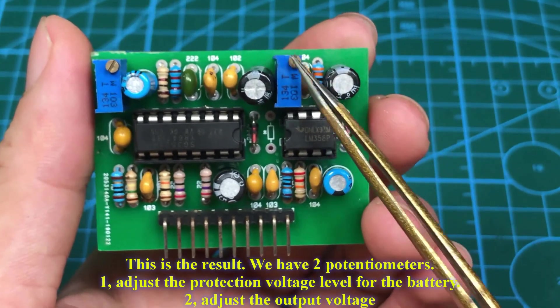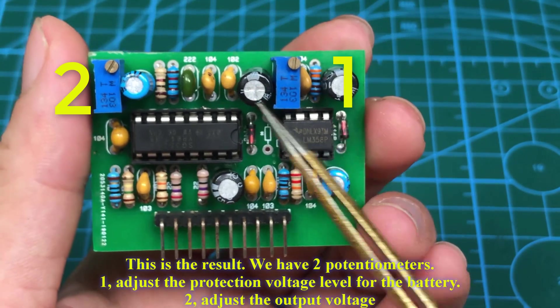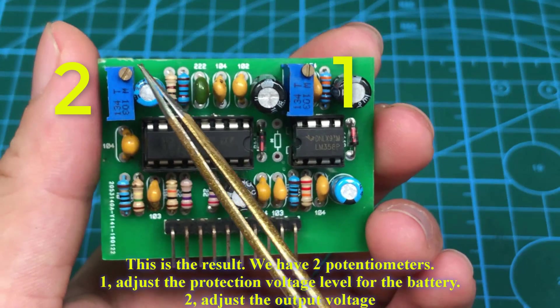This is the result. We have two potentiometers. One adjusts the protection voltage level for the battery. Two adjusts the output voltage.